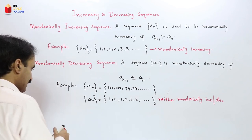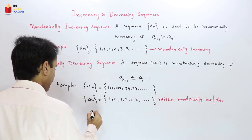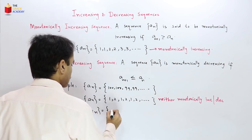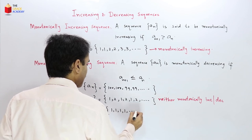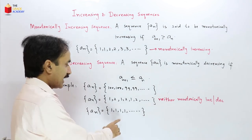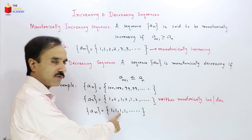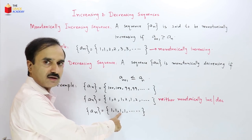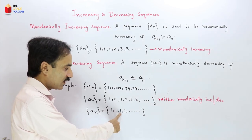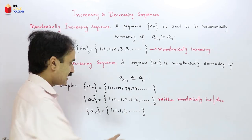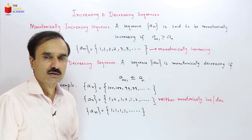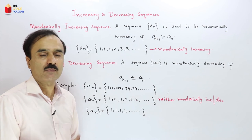What about the sequence a_n = 1, 1, 1, 1, 1 — the same number repeated? Here, any term is less than or equal to its previous term, and also greater than or equal to its previous term. So this sequence is both monotonically increasing and monotonically decreasing.